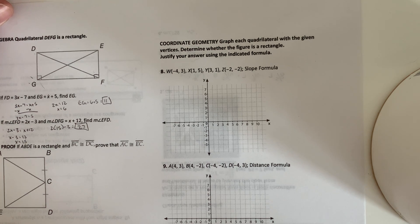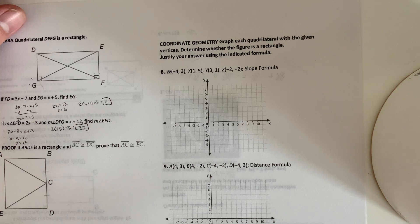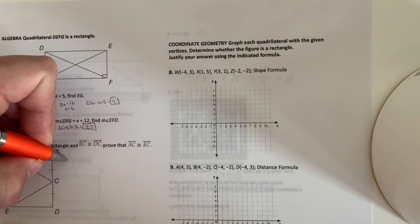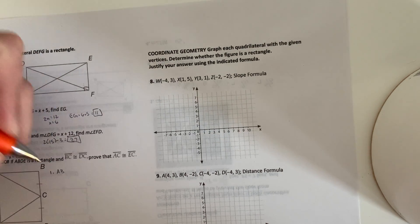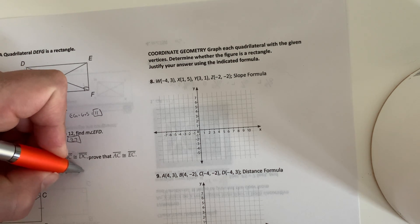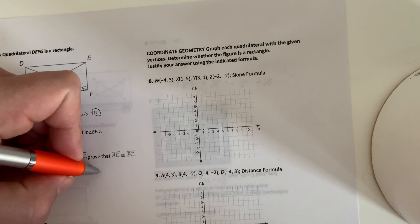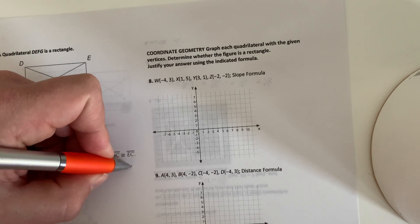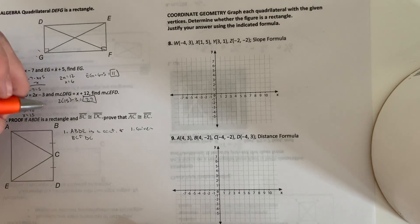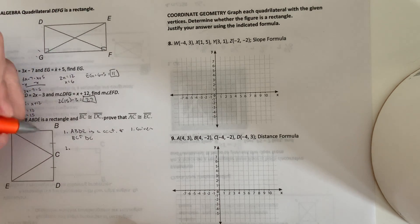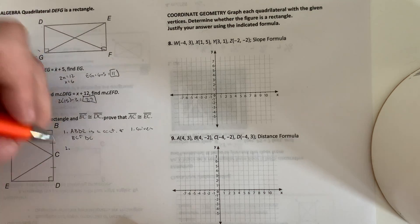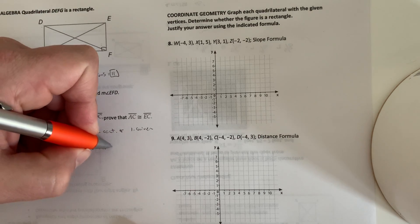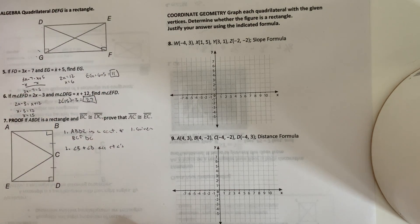All right, so prove ABDE is a rectangle and BC is congruent to DC. Prove that AC is congruent to EC. So 1, we're going to write our given information. So ABDE is a rectangle. And BC is congruent to DC. Which is a given. So number 2, I could say that angle B and angle D are right angles because it's a rectangle. So angle B and angle D are right angles. And that would be the definition of a rectangle.